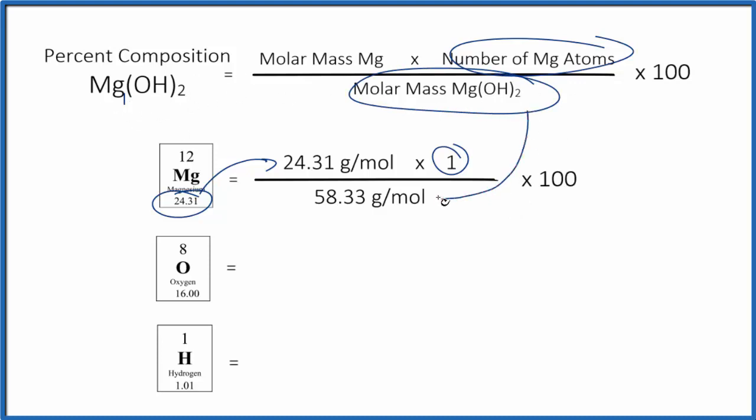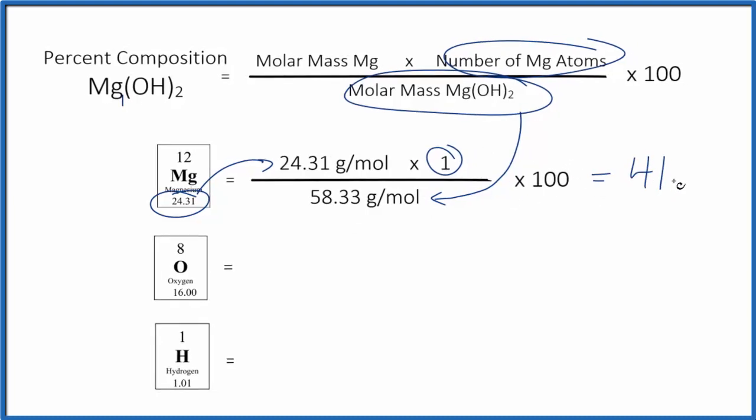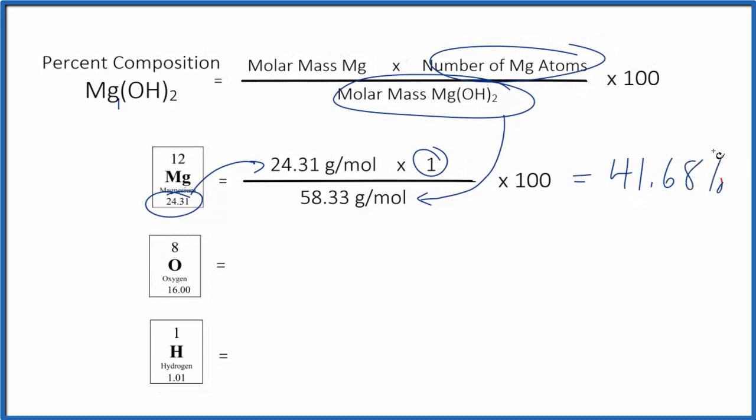If you need help finding the molar mass for Mg(OH)₂ here, there's a link at the end of the video. So we multiply, then divide, and to get a percent, we multiply that number by 100. That gives us 41.68%. That's the percent composition by mass for magnesium in magnesium hydroxide.